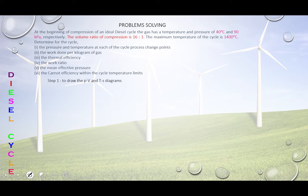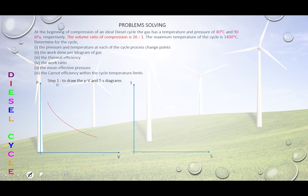I'll show you the PV and TS diagram for the diesel cycle. On the PV diagram you have the isentropic line representing adiabatic compression. On both the PV and TS diagrams you can see the two isentropic processes, the constant pressure process, and the constant volume process.